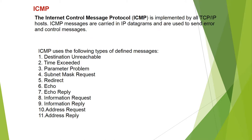ICMP — the Internet Control Message Protocol — is implemented by all TCP/IP hosts. ICMP messages are carried in IP datagrams and are used to send error and control messages. ICMP uses the following types of messages: destination unreachable, time exceeded, parameter problems, subnet mask request, redirect, echo, echo reply, information request, information reply, address request, and address reply.